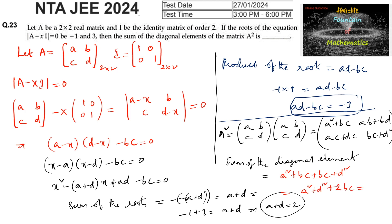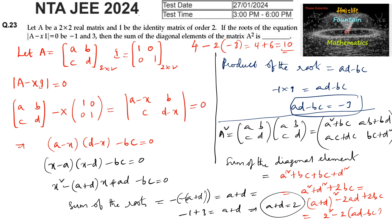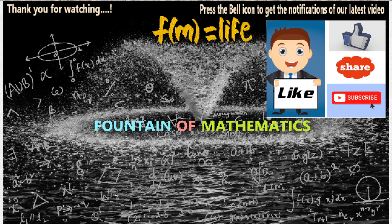We write a² + d² + 2bc = (a+d)² − 2ad + 2bc = (a+d)² − 2(ad − bc). Substituting a+d = 2 and ad − bc = −3: = 2² − 2(−3) = 4 + 6 = 10. So the answer is 10.